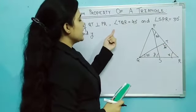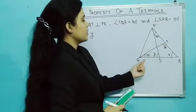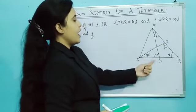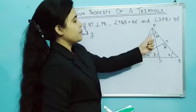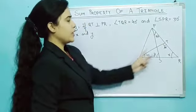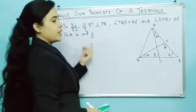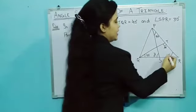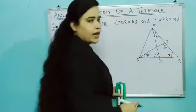Now angle TQR is equal to 40 degrees, and angle SPR is equal to 30 degrees. So these are the two angles, Q and R. Now we have to find x and y. So this is x and y angle we will find.